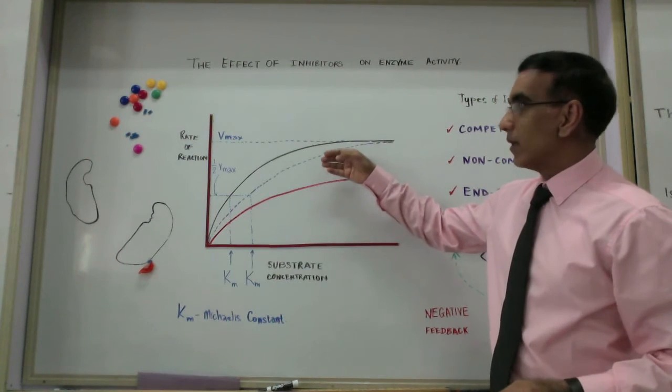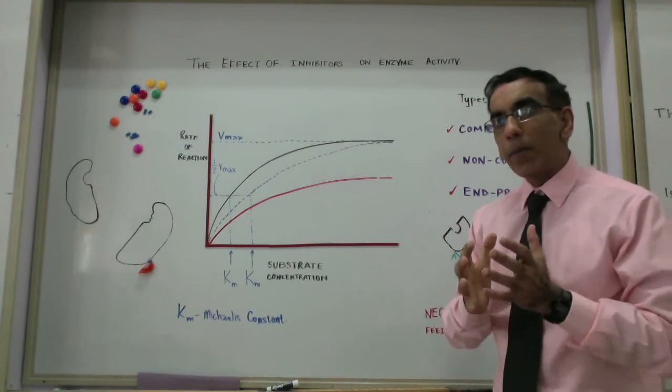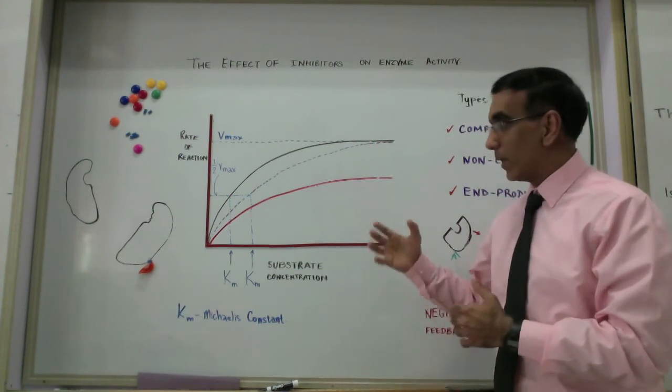In comparing the effect of a competitive inhibitor versus no competitive inhibitor, in both cases, the maximum rate is achieved. So then, how can we compare the impact of a competitive inhibitor?